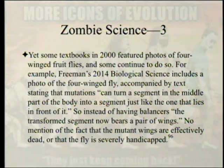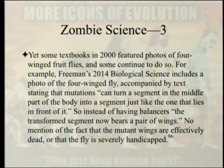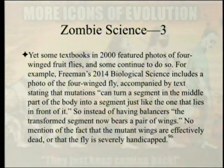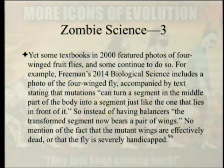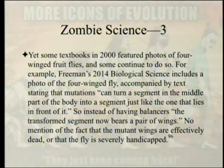Yet some textbooks in 2000 featured photos of four-winged fruit flies, and some continue to do so. Freeman's 2014 Biological Science includes a photo of the four-winged fly stating that mutations can turn a body segment into one just like the segment in front of it, so the transformed segment now bears a pair of wings. Sounds wonderful — except we just learned it can't fly. No mention that the mutant wings are effectively dead or that the fly is severely handicapped.